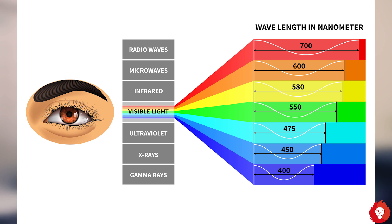All light that is emitted is actually a form of electromagnetic radiation — visible light included. There are other forms of light apart from visible light, including gamma rays, X-rays, microwaves, radio waves, infrared light, and UV light.